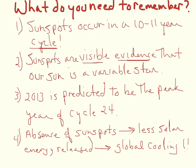What do you need to remember about this? You need to know that sunspots occur in a 10 to 11 year cycle, and that sunspots are visible evidence that our Sun is a variable star. 2013 is predicted to be the peak year of this cycle, so we should be seeing more sunspots and the Sun should be more active. There are times in our history where we've seen a prolonged absence of sunspots, which leads to less solar energy being released — and I bet you'll read about global cooling. Thank you.